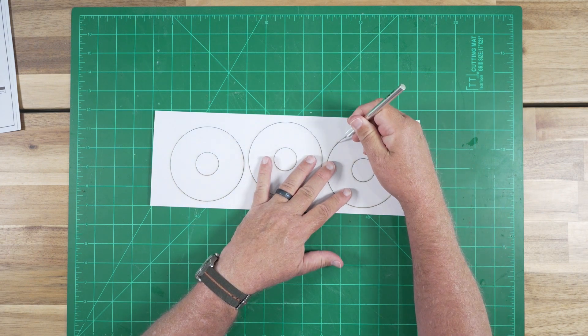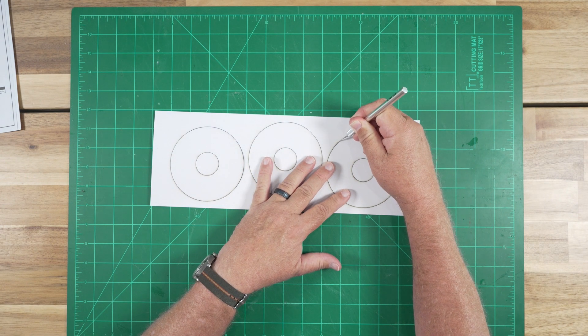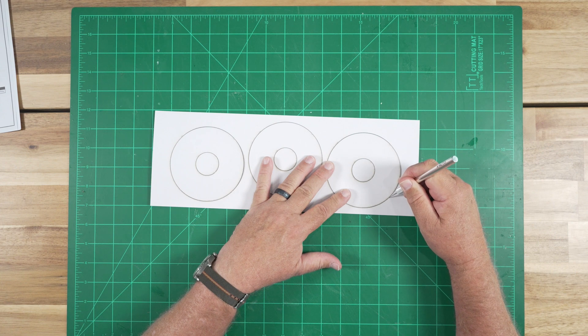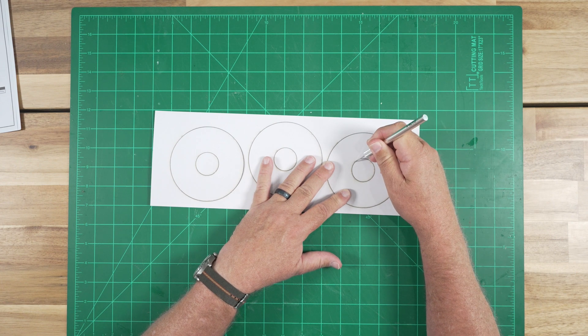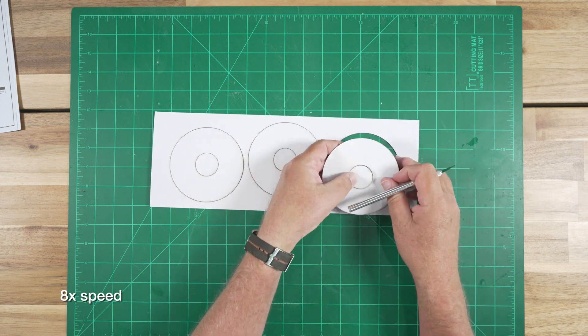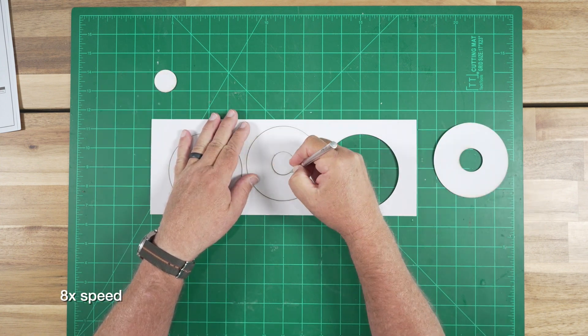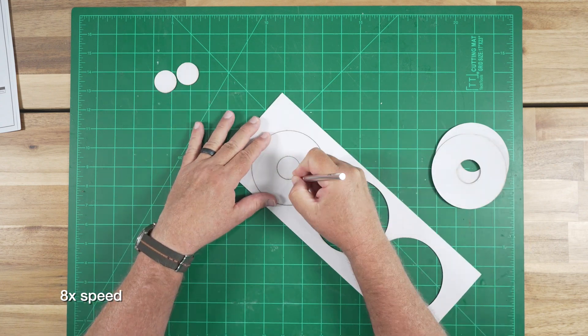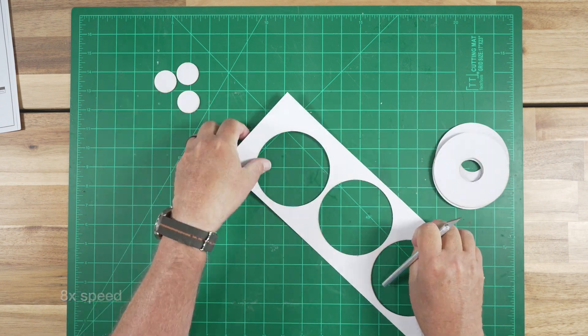We'll start by cutting the centering rings free of the backing sheet. Next,